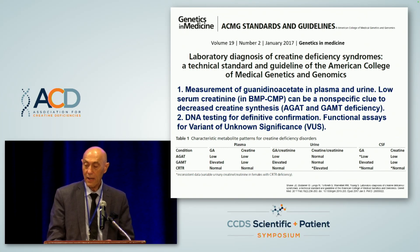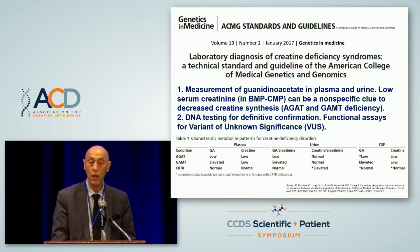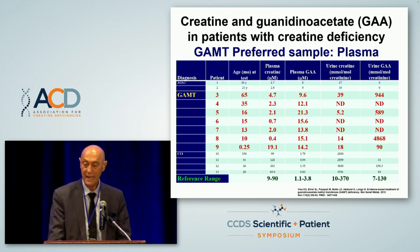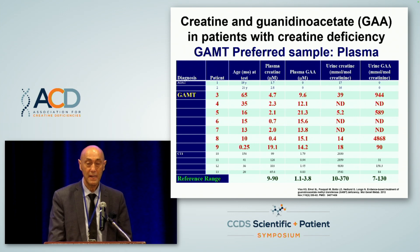The technical standards for diagnosis of creatine deficiency call for measurement of creatine and guanidino acetate in plasma. Looking at levels of many patients identified at ARUP over the years, guanidino acetate is increased in all patients. In patients diagnosed very close to the newborn period, creatine level can still be normal.